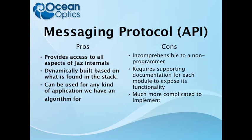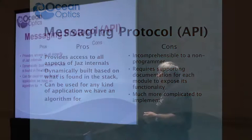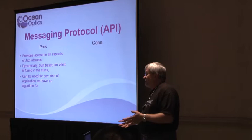It's dynamically built on what's found in the stack. So when you don't have a spectrometer, that spectrometer module doesn't run, and your API knows that and doesn't perform any of the functions related to it. It can be used for any kind of application you have an algorithm for. So if you've got an algorithm for something that involves anything available on a JAZ, you can do it in the API — no matter how complicated it is.